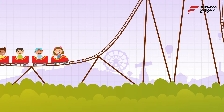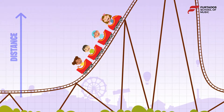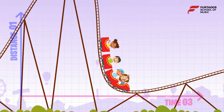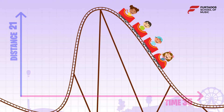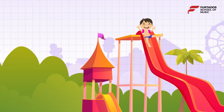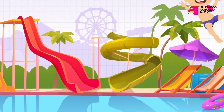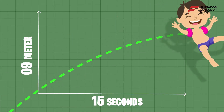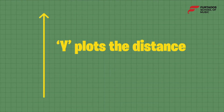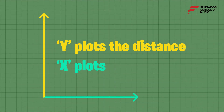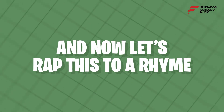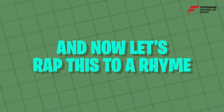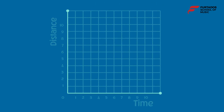The graph of distance and time helps you read the ups and downs of the climb — of how far an object has travelled in a given time. The y plots the distance, the x plots the time. And now let's wrap this to a rhyme.